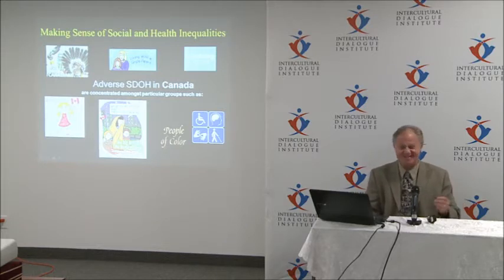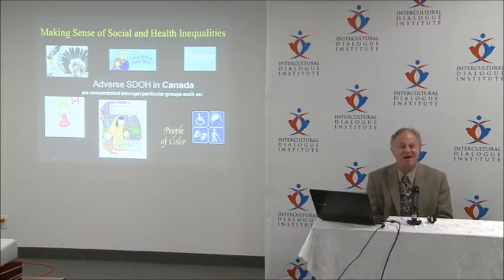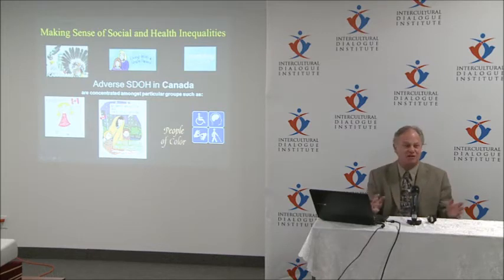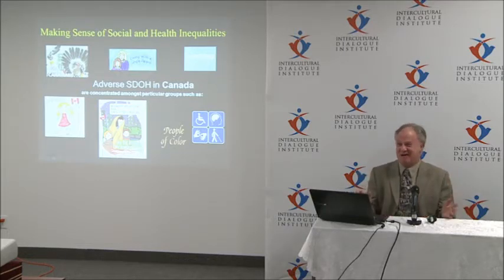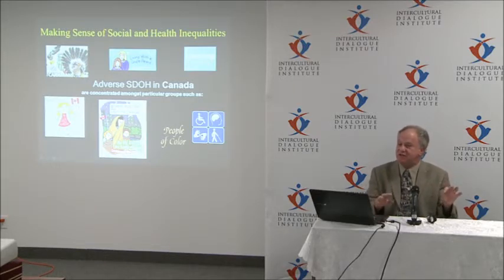When making sense of why particular groups experience adverse health — what we call health inequalities — it's just about everybody. If you happen to be an Aboriginal Canadian, a single mom, working class, female, an immigrant, a person of color, or someone with a disability, you're at risk for adverse social determinants of health. It seems that everybody except middle-class white males is at risk, and that tells you something about the nature of our society.